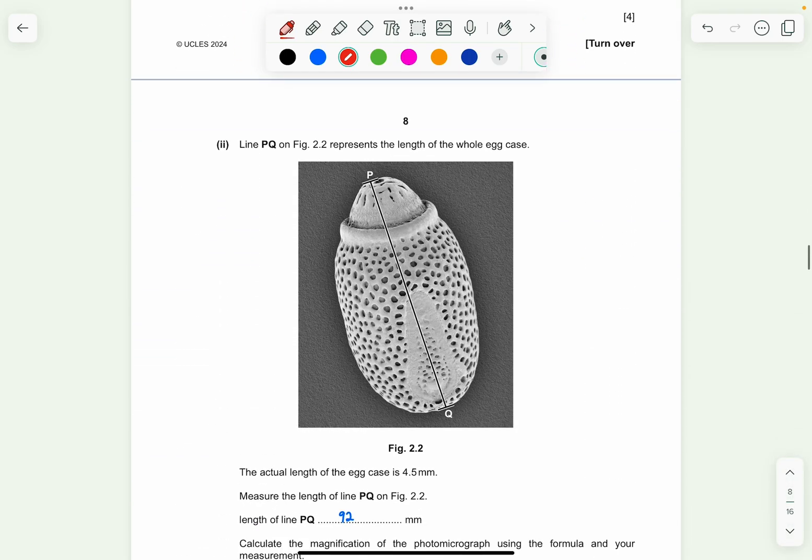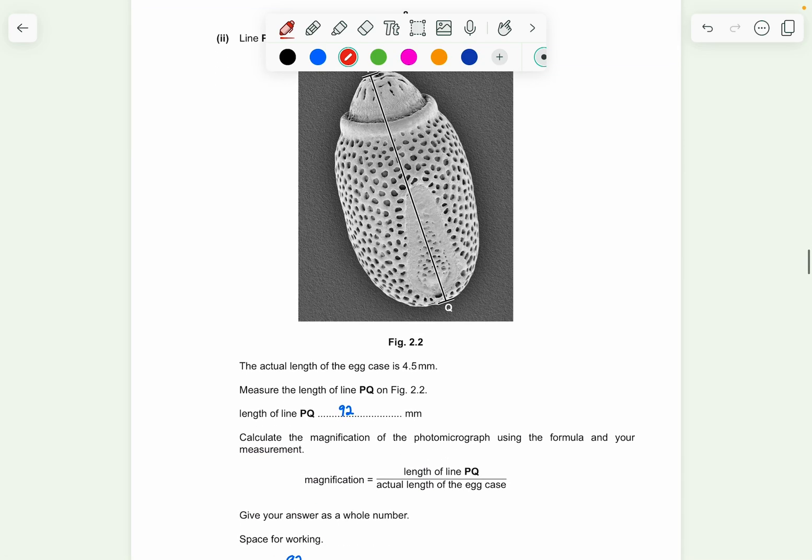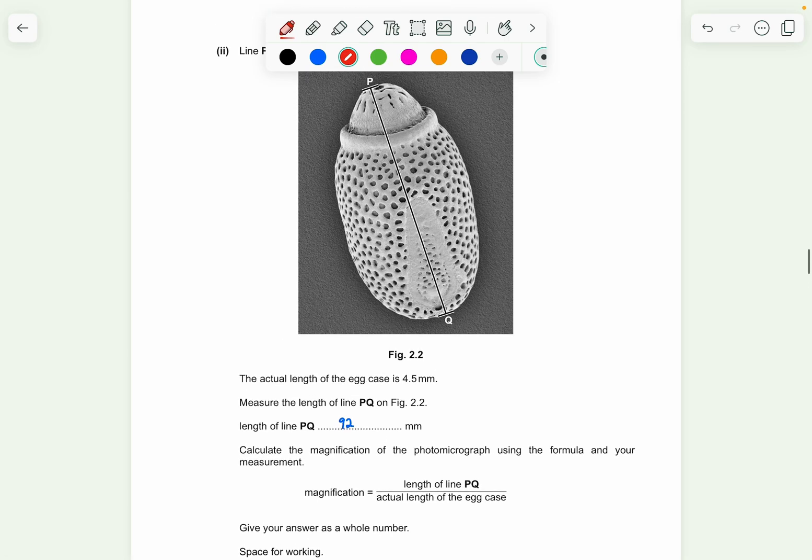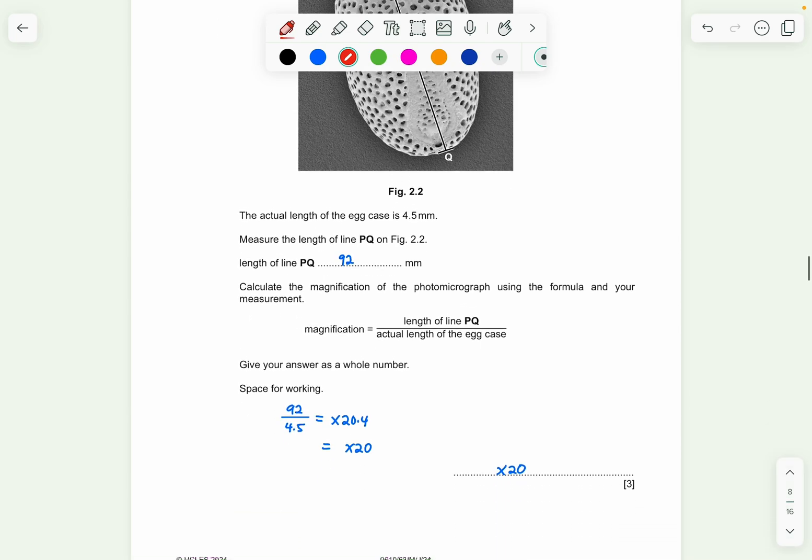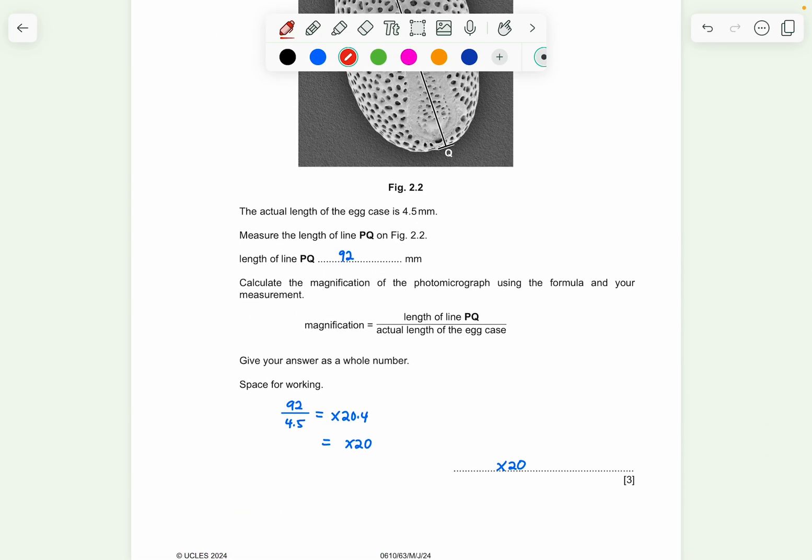Now, part two, line PQ on figure 2.2 represents the length of the whole egg case. So the actual length of the egg case is 4.5 millimeters. So measure the length of the line PQ on figure 2.2, which is 92 millimeters. So your answer can be about plus 2 minus 2. And then you give your answer as a whole number. By finding the magnification, you can use the length of the line divided by the actual length. So it'd be 92 divided by 4.5. 4.5 is that here. And you're going to get times 20.4. So they want it in a whole number. So 0.4, we'll round off to the zero, which is times 20 only. So the answer is times 20.